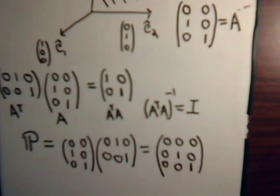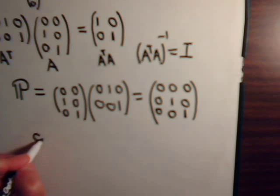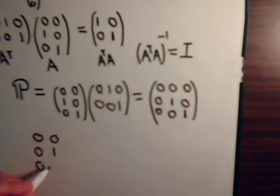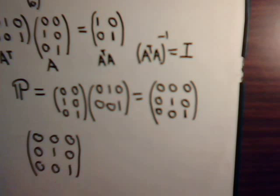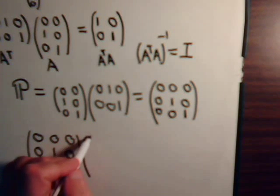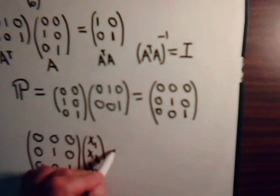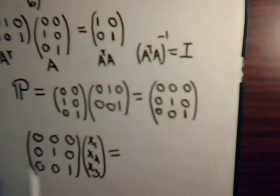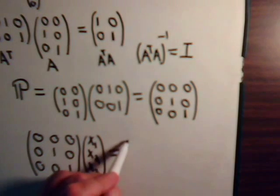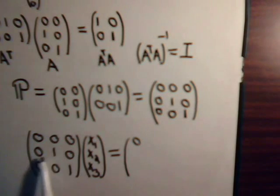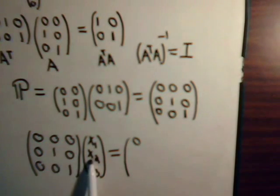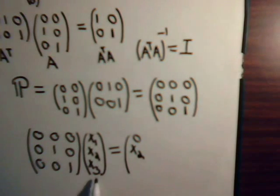So here we have the resulting projection matrix. Applying it to a vector [x1, x2, x3]: going across and down, that gives us x2; going across and down, that is x3. So the matrix simply lops off the x1 component, leaving only x2 and x3 — which of course will lie in the E2, E3 plane.